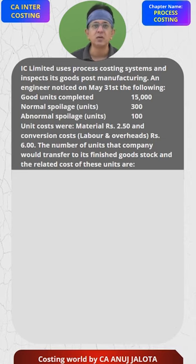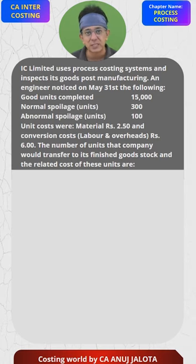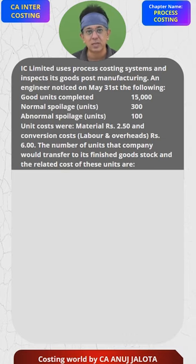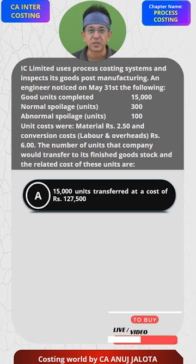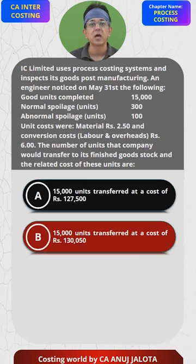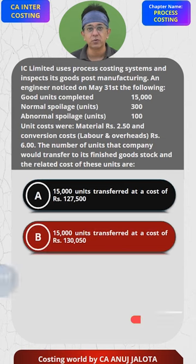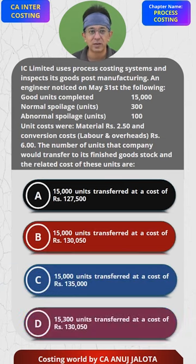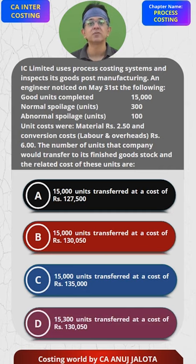Unit costs were: material Rs. 2.50 and conversion costs (labor and overheads) Rs. 6. The question asks for the number of units that the company would transfer to finished goods stock and the related cost. The four options are: 15,000 units at Rs. 127,500; 15,000 at Rs. 130,050; 15,000 at Rs. 135,000; and 15,300 units at Rs. 130,050.